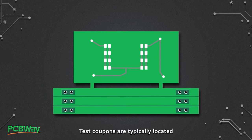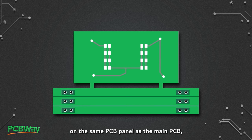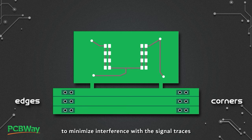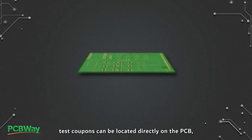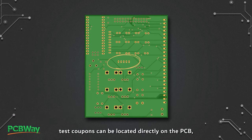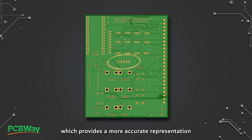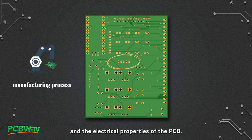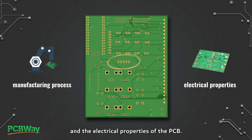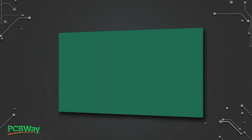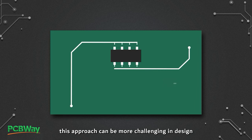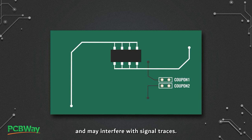Test coupons are typically located on the same PCB panel as the main PCB, usually at the edges or corners, to minimize interference with the signal traces on the main PCB. Alternatively, test coupons can be located directly on the PCB, which provides a more accurate representation of the manufacturing process and the electrical properties of the PCB. However, this approach can be more challenging in design and may interfere with signal traces.